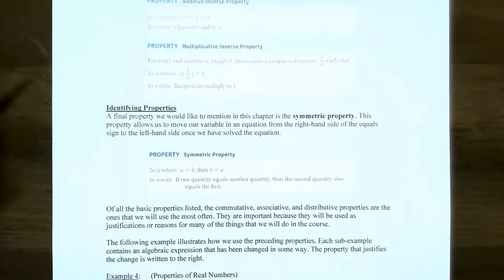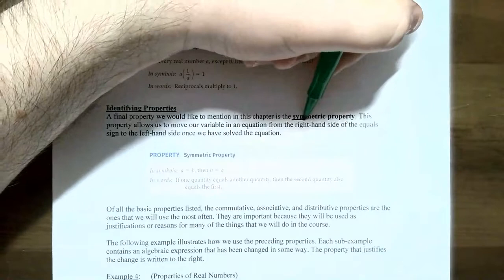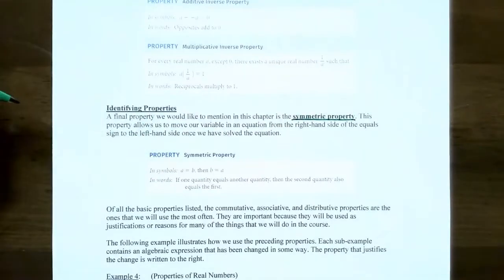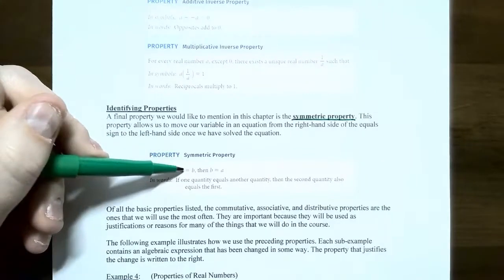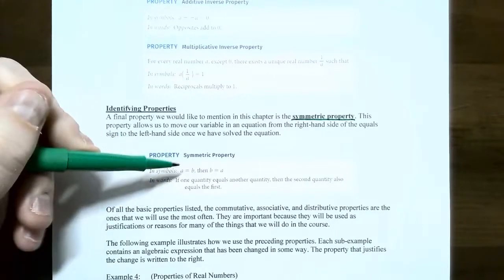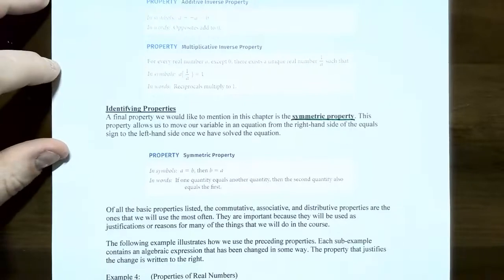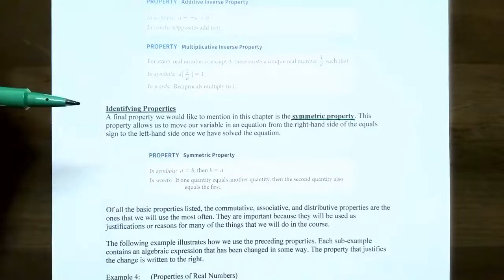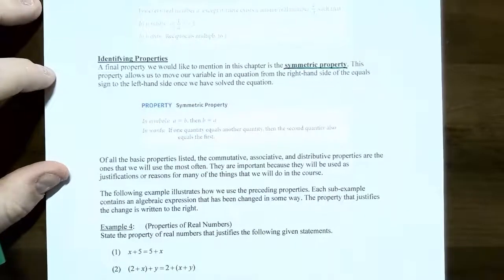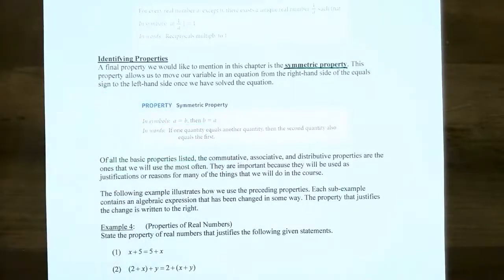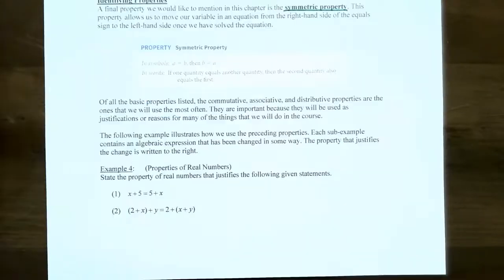The last property is the symmetric property: whatever is equal on the left side and right side of an equation, it doesn't matter which side is which. If a equals b, then b equals a. Of all the basic properties in this section, the commutative, associative, and distributive properties are used most often in math and are good justifications for why we simplify algebraic expressions the way we do.